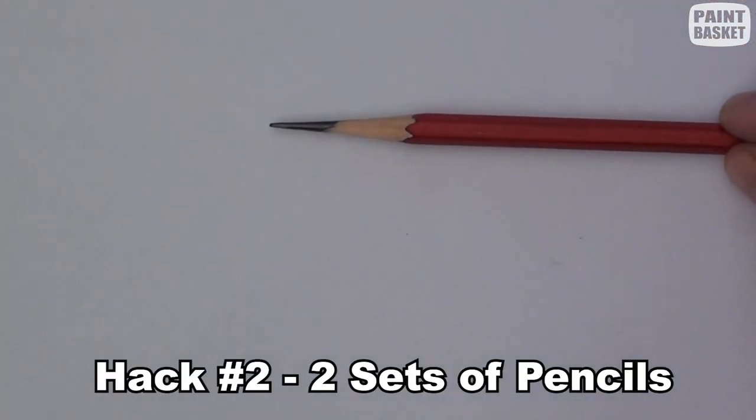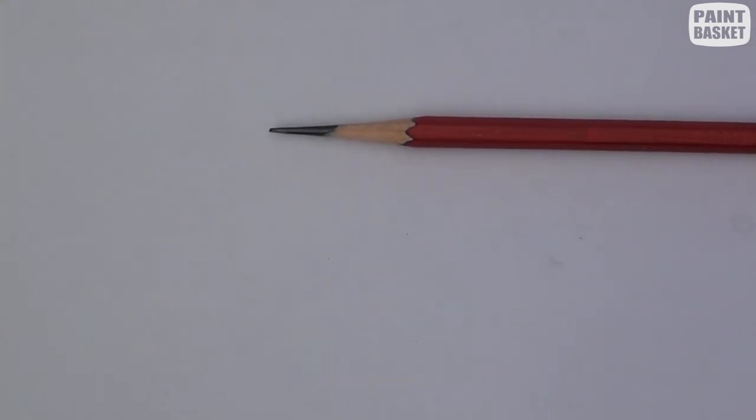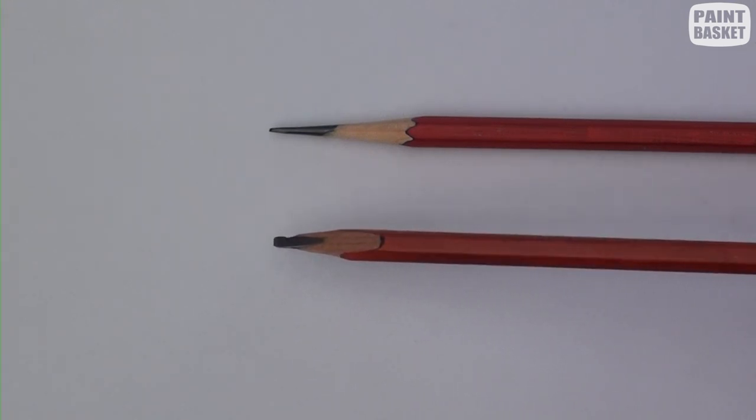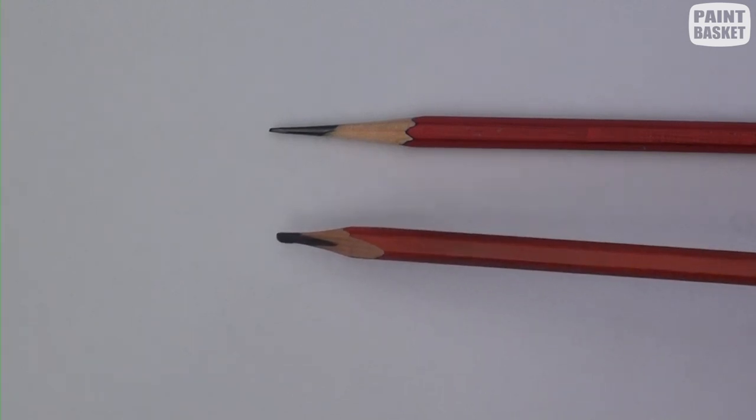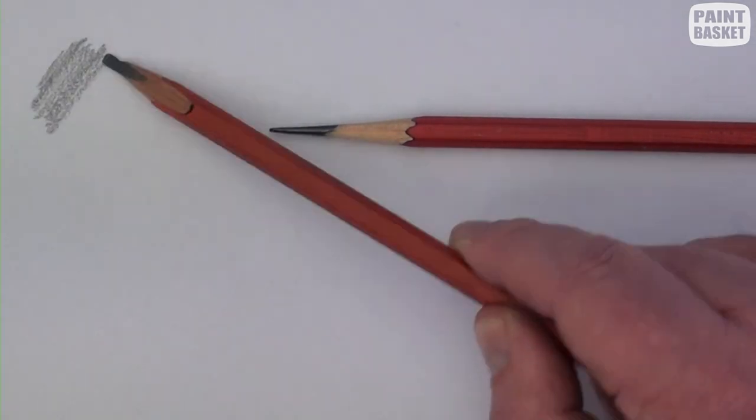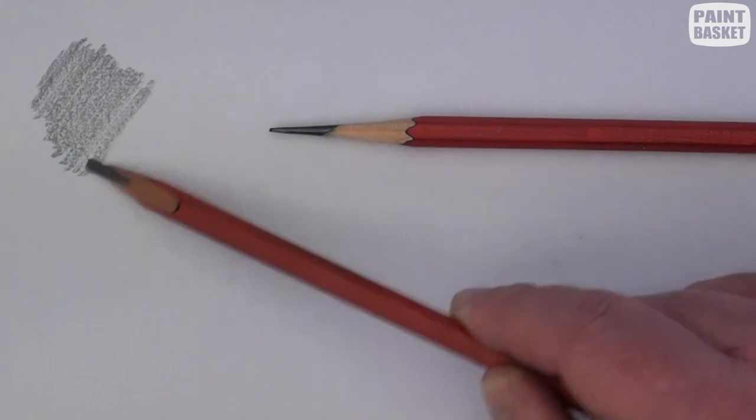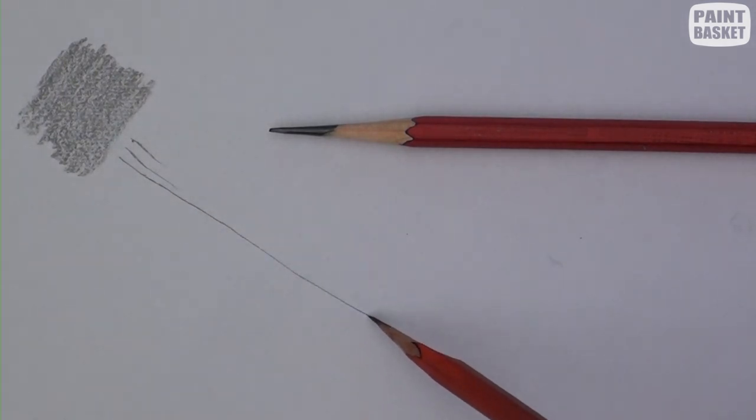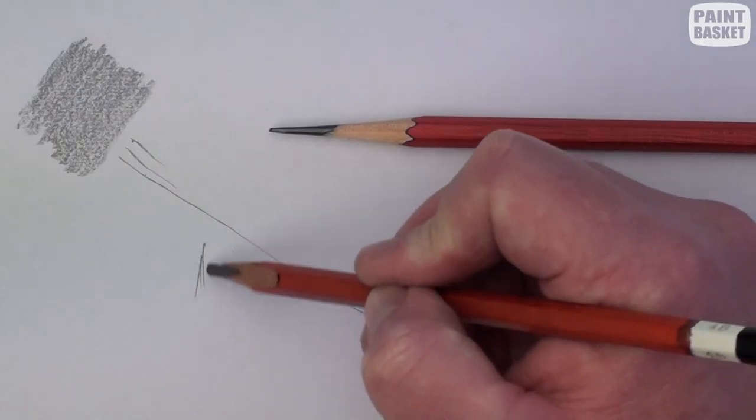Hack number two is to use two sets of pencils. One set I sharpen to a standard round tip as normal. This sharp point is perfect for detail work. The second set of pencils are sharpened to a chisel point. To see how I do this safely, you can watch my Intro to Pencil Drawing class. I'll leave a link in the description below. You can use the chisel point pencils in many ways. If you hold it flat, you can quickly shade large areas. If you hold it upright, you can use it to draw long thin lines without the tip becoming blunt. It's also perfect for drawing hair.